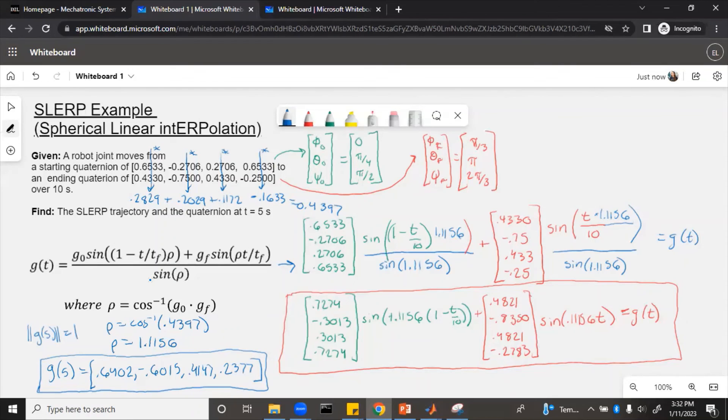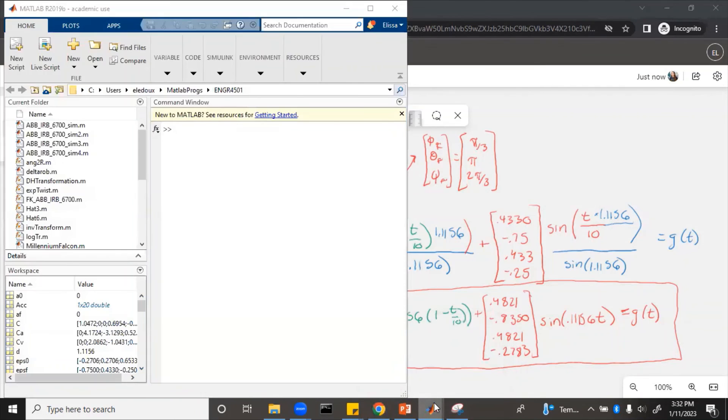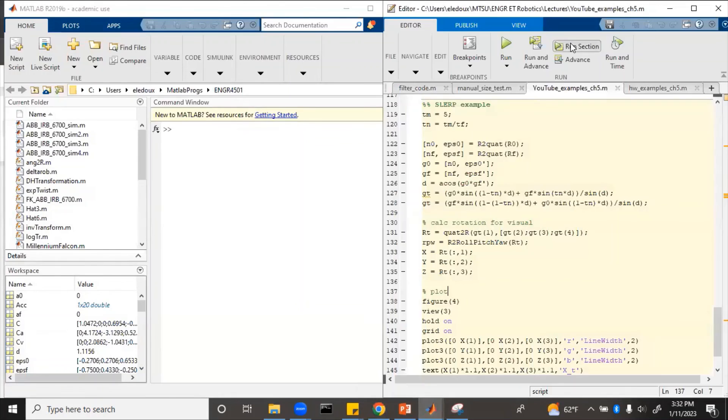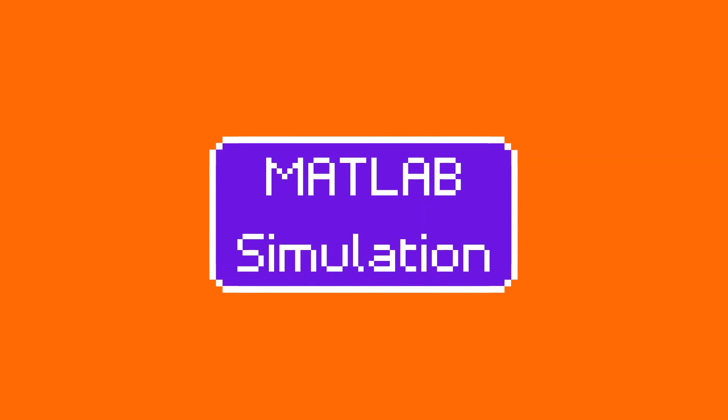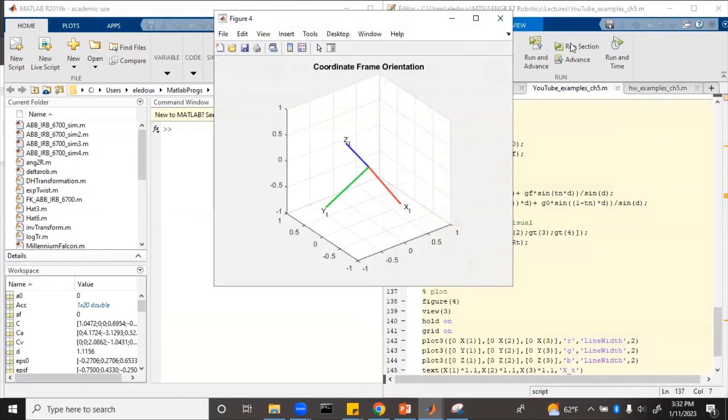But now what does this actually look like? Since quaternions are difficult to visualize, let's run a MATLAB simulation and see what it comes out to. So this is the orientation of the coordinate frame. You can see the directions that x, y, and z point, as opposed to the normal x, y, z coordinate frame, this is how that quaternion would have rotated the joint.